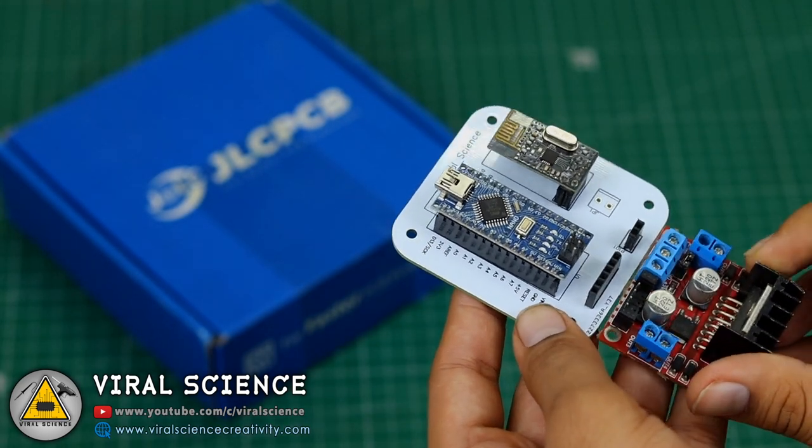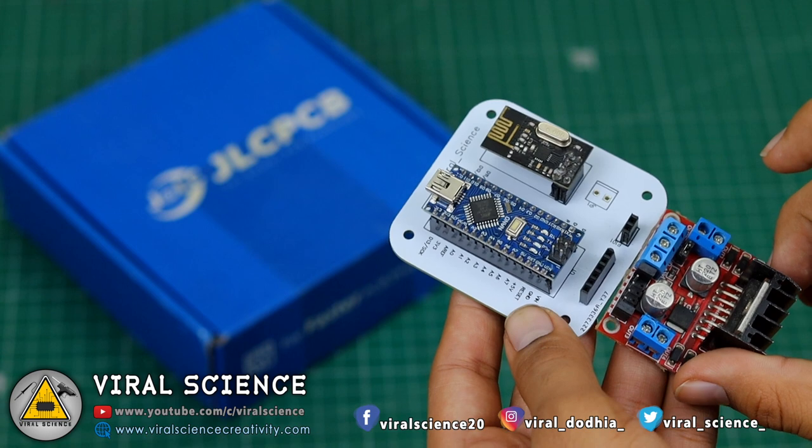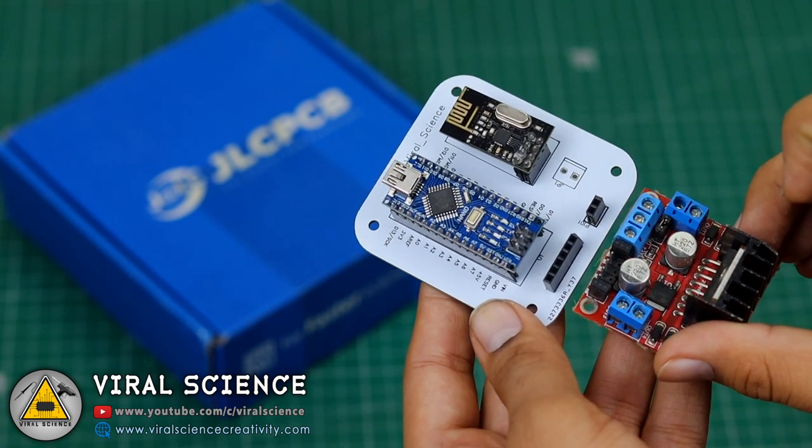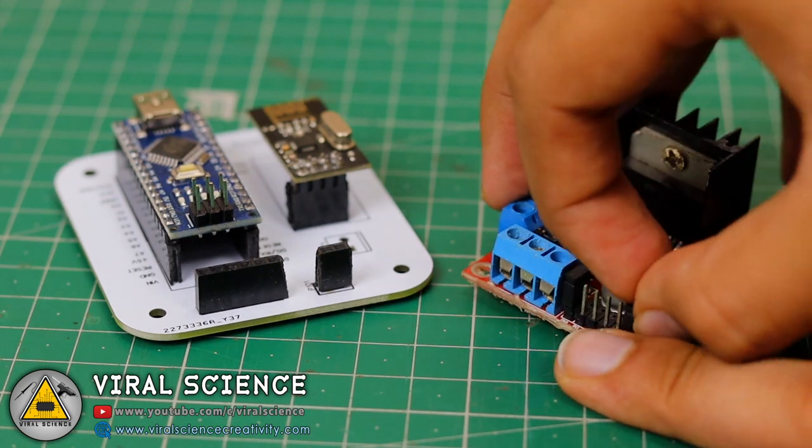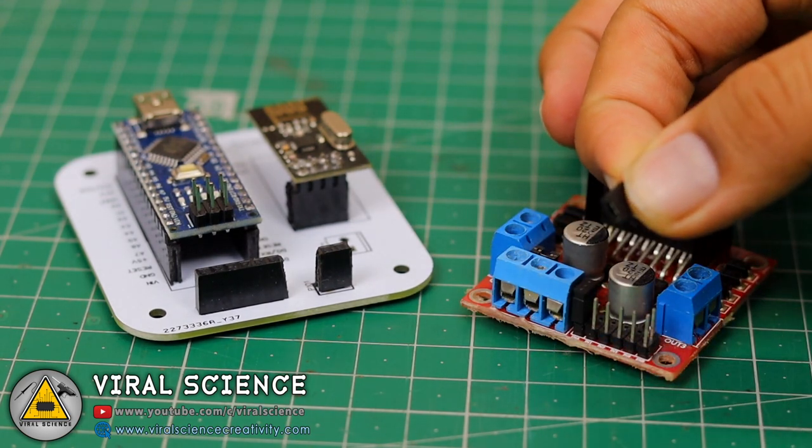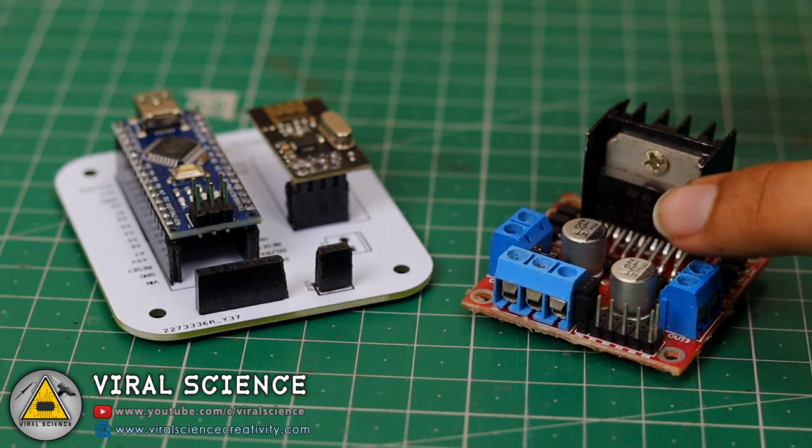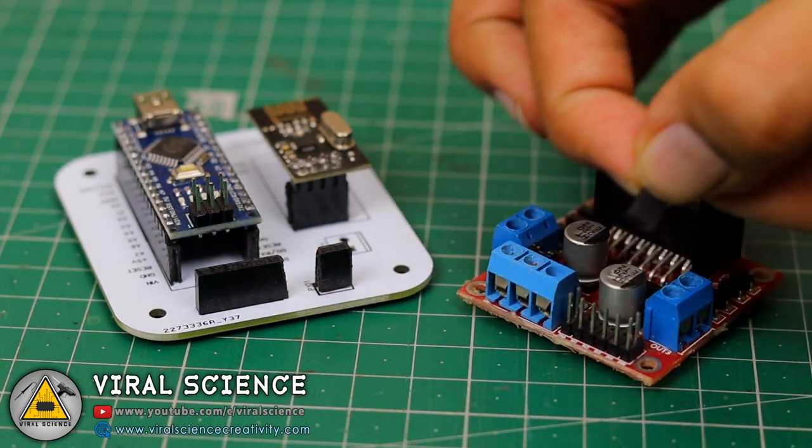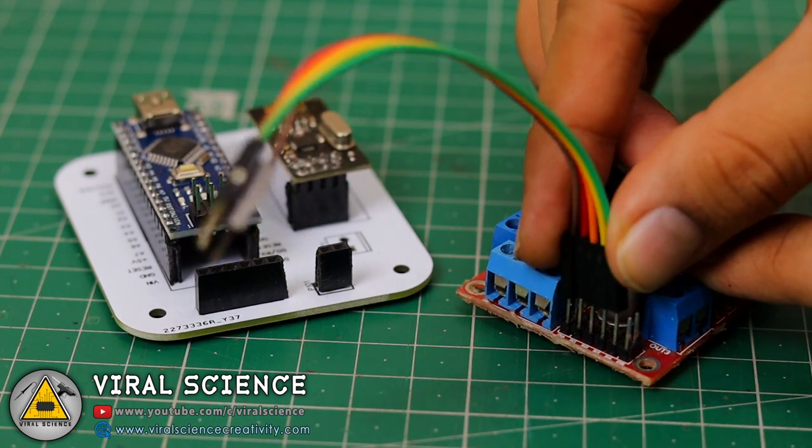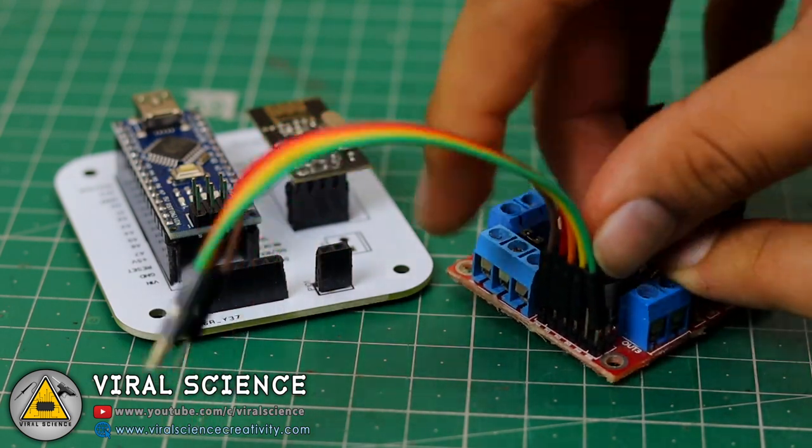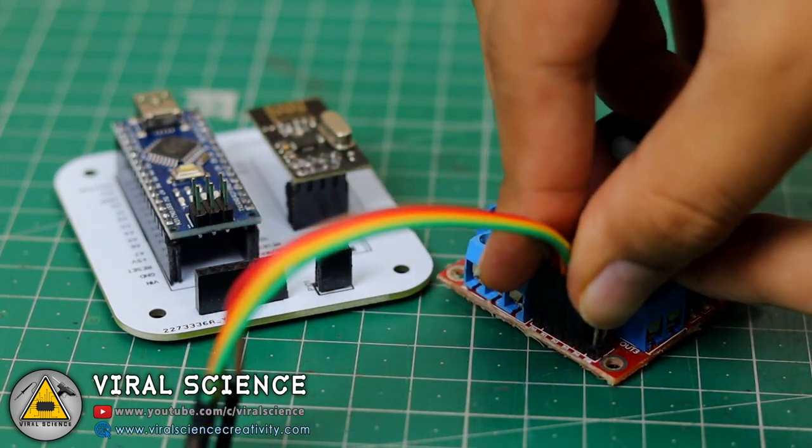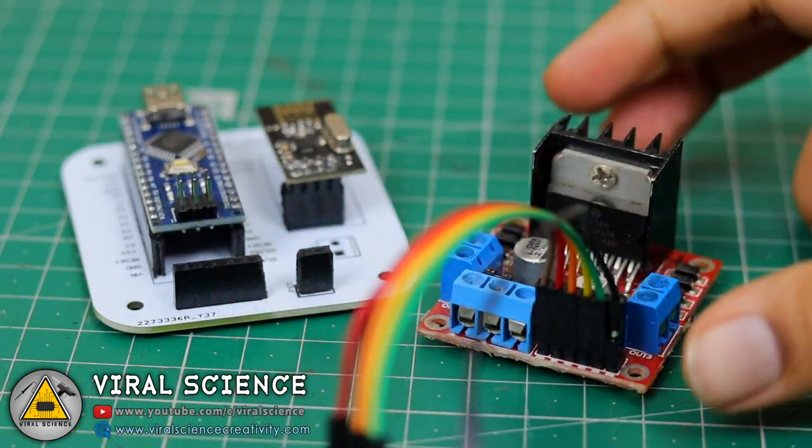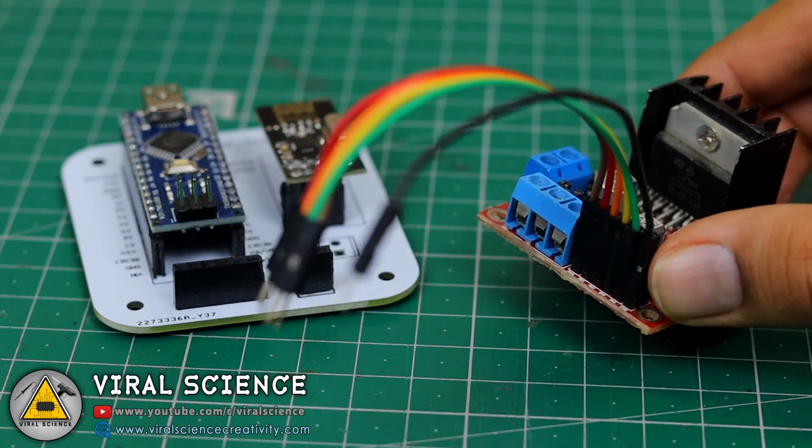So using these PCBs makes the project much more easier so we don't have to do that messy connections on our project so it becomes very easy for all the connections. So first we will remove these jumper caps from our L298N motor driver and we will connect all the connections from L298N motor driver to our PCB board. These are the same connections which I have shown you in the circuit diagram before so you have to follow that only.